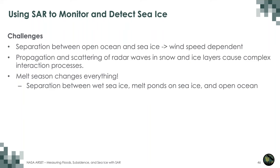The melt season changes everything. Separating wet sea ice, melt ponds, and open ocean is very challenging. The open ocean backscatter is wind-speed dependent, and we have complex propagation and scattering of radar waves through snow and ice layers. It is therefore challenging to develop one solution — whether AI/machine learning or manual classification — that works year-round.